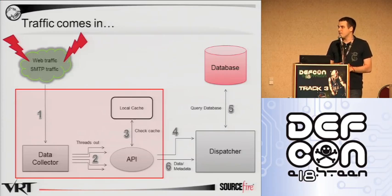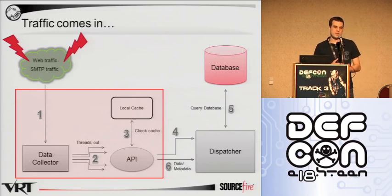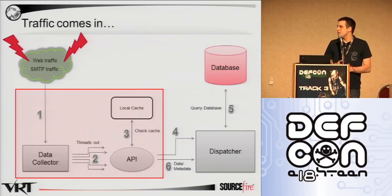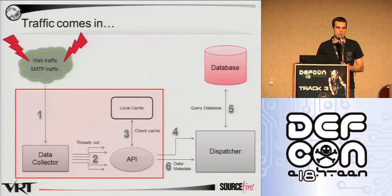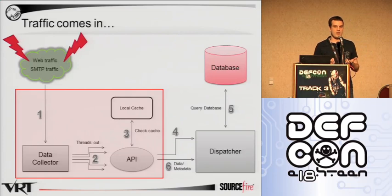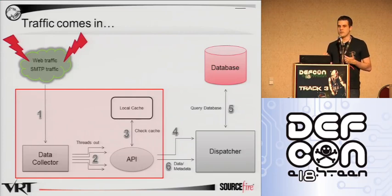If we find that that MD5 and file size already exists in the local cache, we can theoretically block immediately, depending on what your type of collection nugget is and what its capabilities are. The dispatcher then, based on the data type — the collection nugget is essentially responsible for knowing what kind of data that is — ships it off with a specific data type and the dispatcher will look up in its routing table the set of all nuggets that are able to effectively analyze those data types.